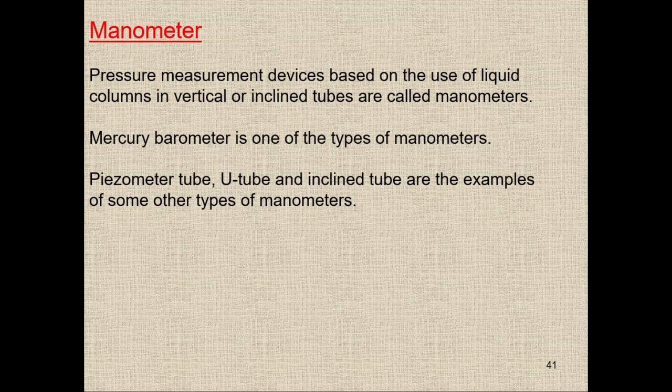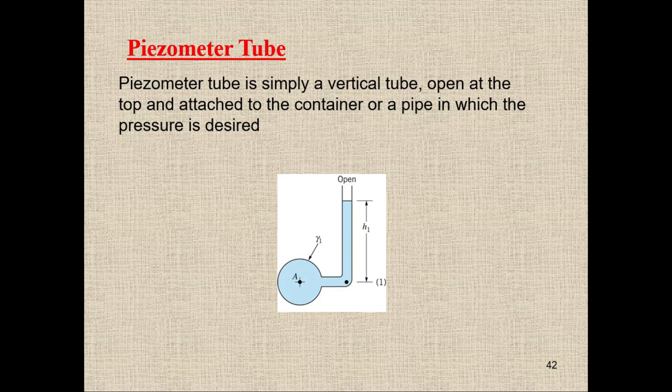For gauge pressure, we use manometers. A manometer is a device that measures pressure using the concept that pressure changes with height — P = ρgh. Pressure measurement devices based on liquid columns in vertical or inclined tubes are called manometers. We have different types: piezometer tube, U-tube manometer, and inclined tube manometer.